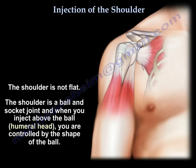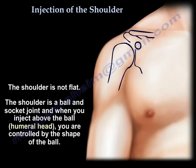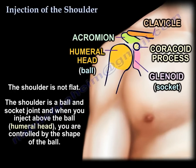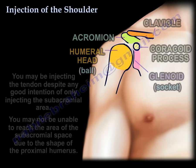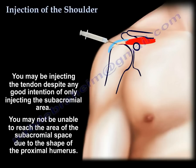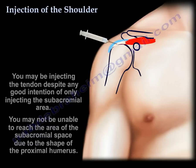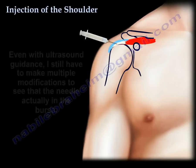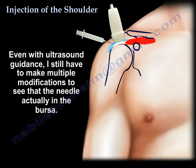The shoulder is not flat — it is a ball and socket. When you inject above the ball, you are controlled by the shape of the ball. Therefore, you may be injecting the tendon despite your good intention of injecting the subacromial area, which you probably cannot reach because of the shape of the proximal humerus. Even with ultrasound, I have to make multiple modifications to make sure that the needle is in the bursa.